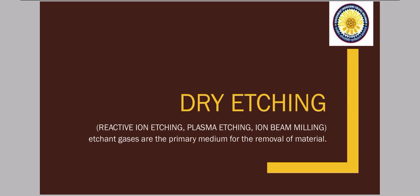Now dry etching. In dry etching, basically three types we are using: reactive ion etching, plasma etching, and ion beam milling. In this dry etching, the etchants are in gaseous phase. Etching gases are the primary medium for the removal of material. There is no liquid chemical in dry etching process.